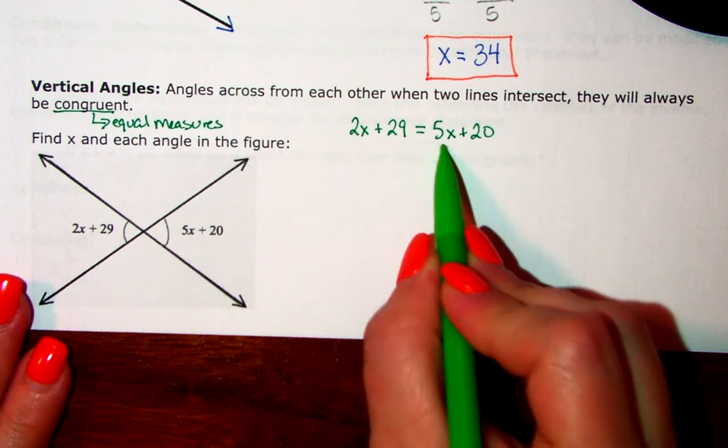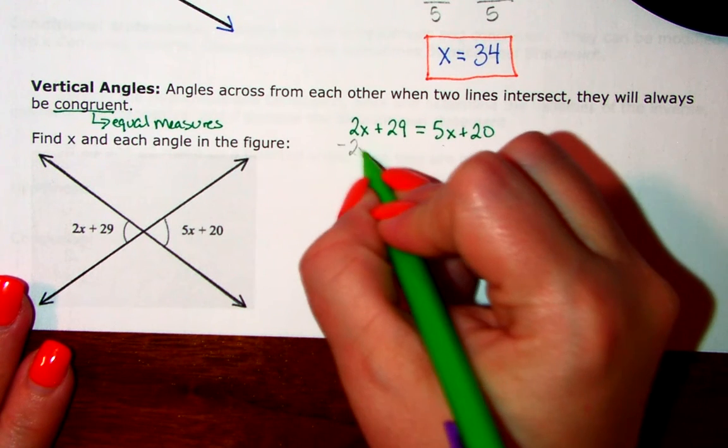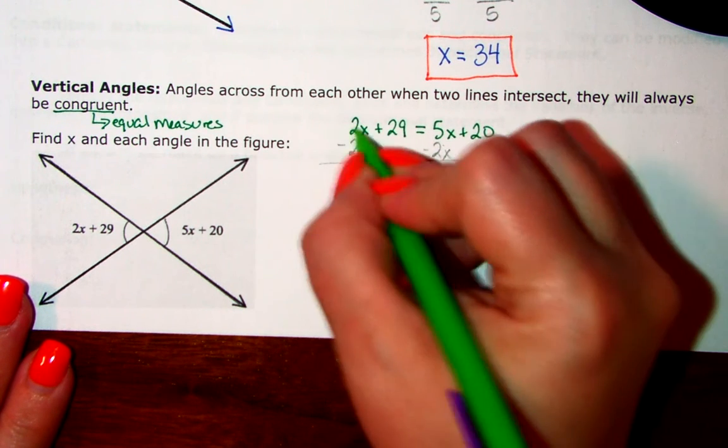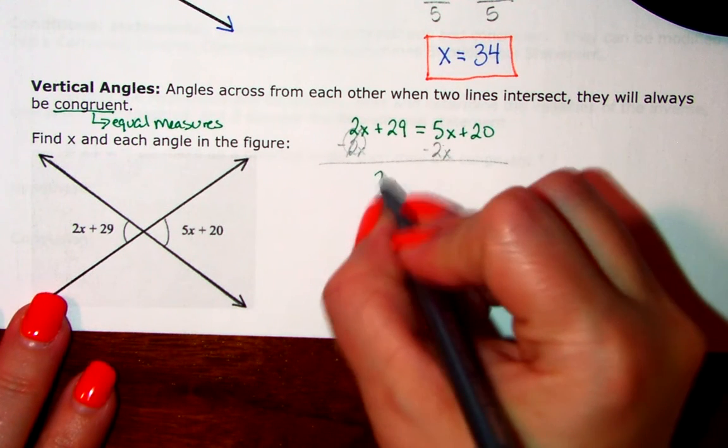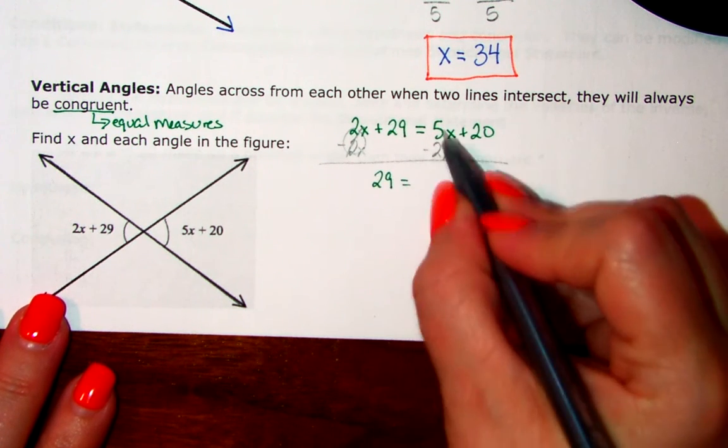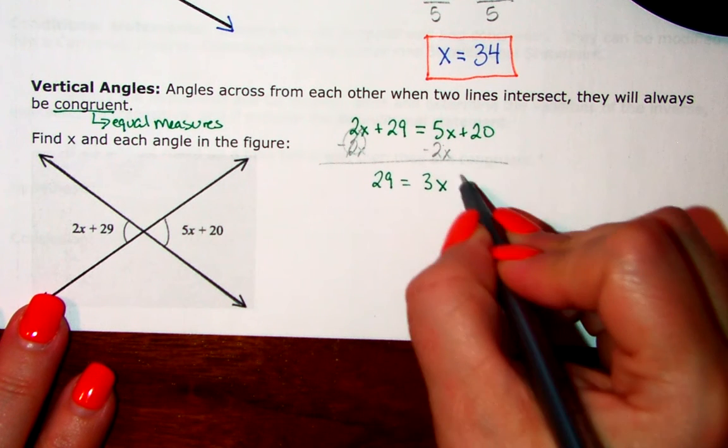So, I'm going to move my smaller x to keep things positive by subtracting 2x on both sides, which is going to leave me with 0 plus 29 equals 3x plus 20.